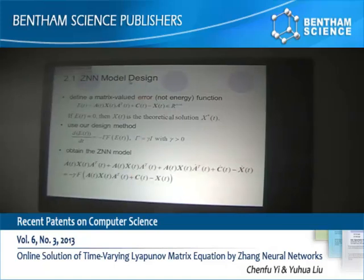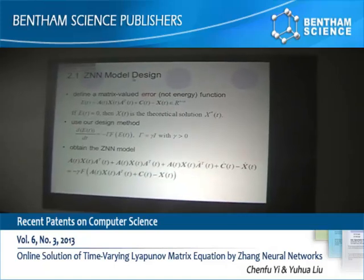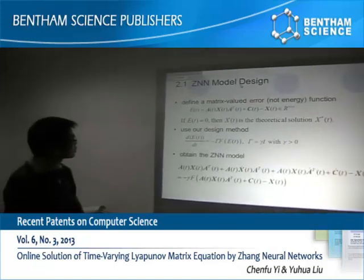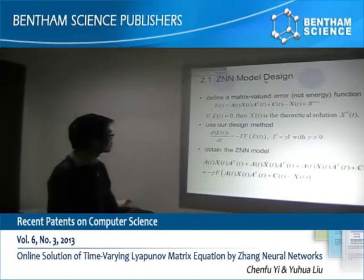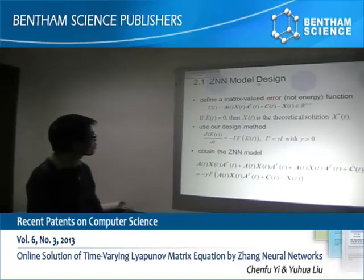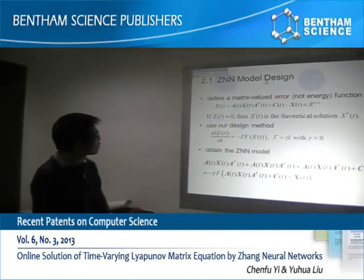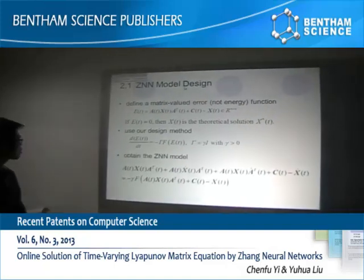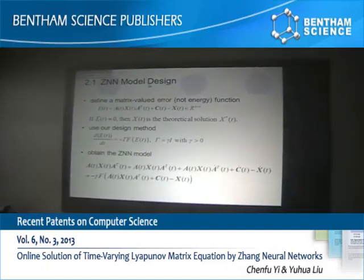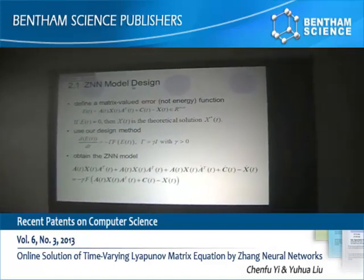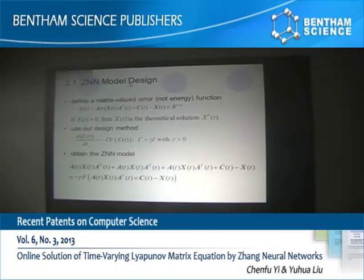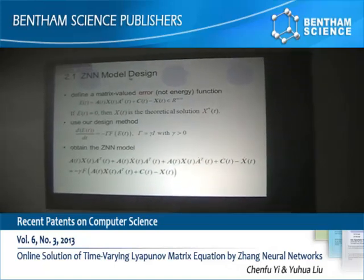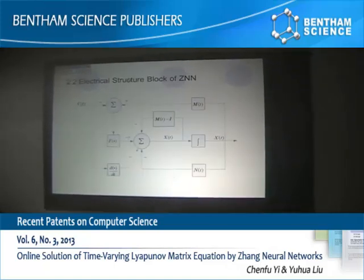To obtain the ZNN models, we follow the following design steps. Firstly, define a matrix-based error function E(T). If E(T) equals zero, then X(T) is the solution. Secondly, use our design method. Then we can obtain the ZNN models.